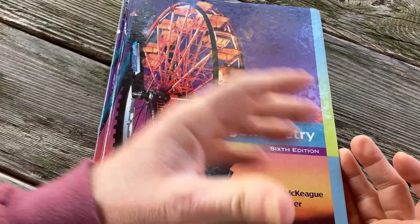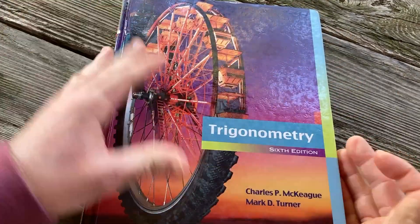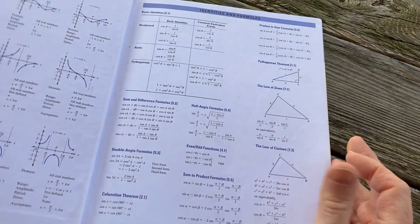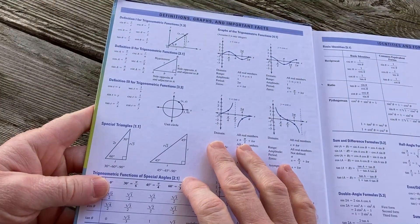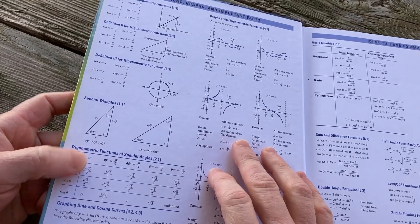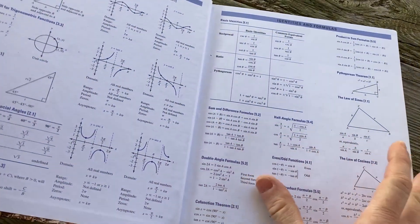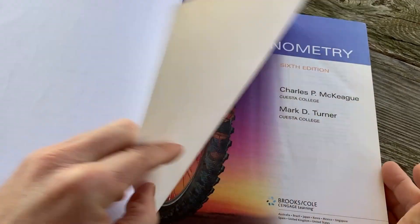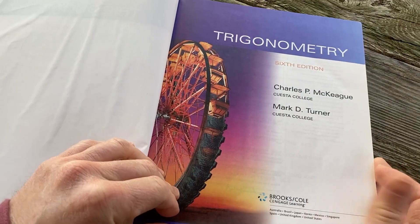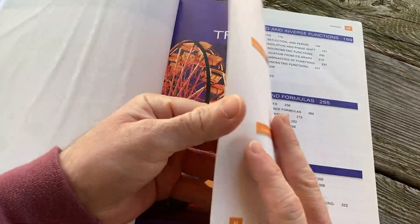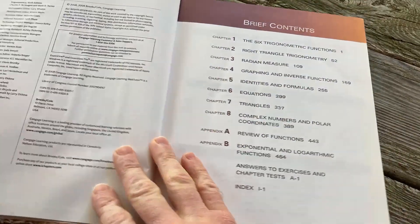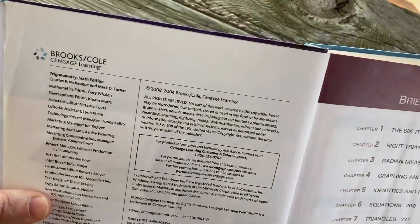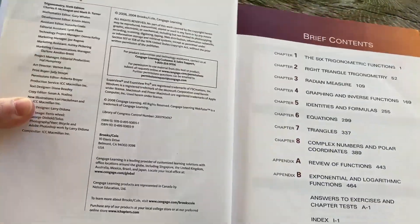So trigonometry looks like it's got some formulas and useful things here, some identities here, which most modern books have. This is the sixth edition. That means it's been out for a while. Brooks Cole Cengage Learning. Let's see if we can find the copyright on this one. So 2008, 2004. Okay, so not super old.